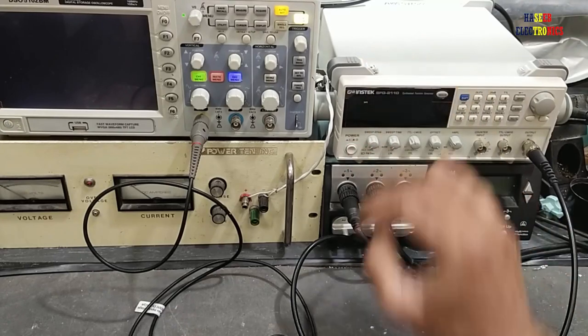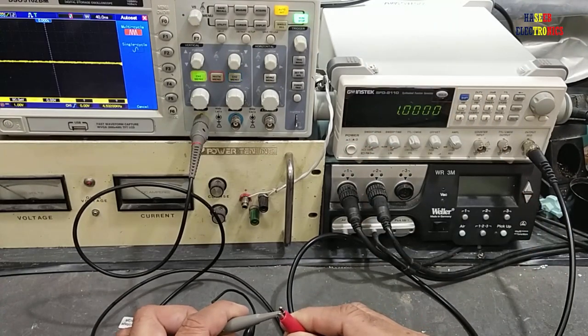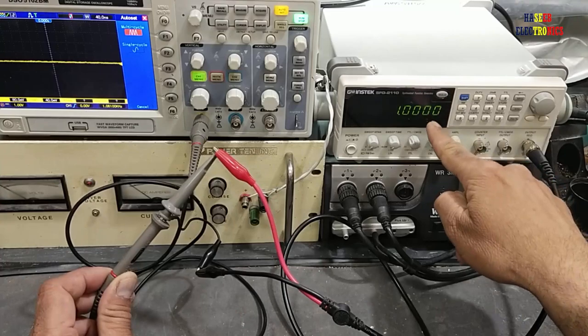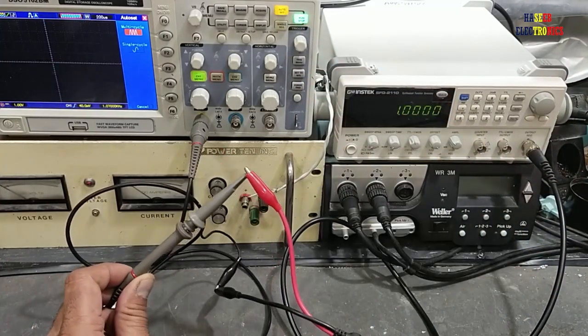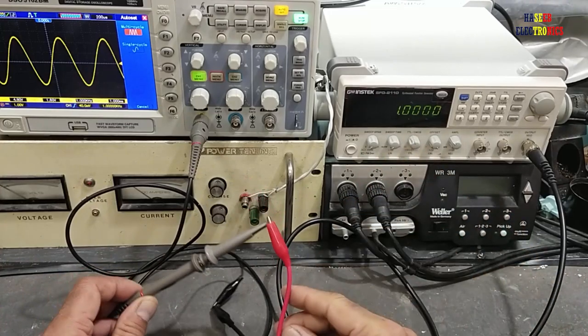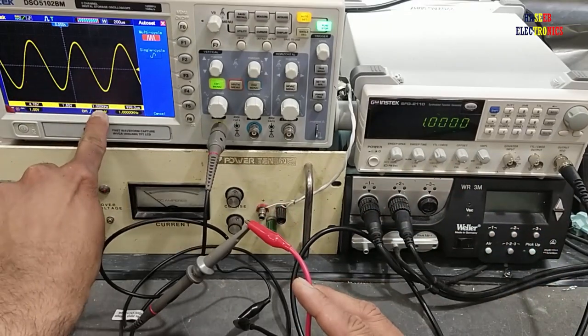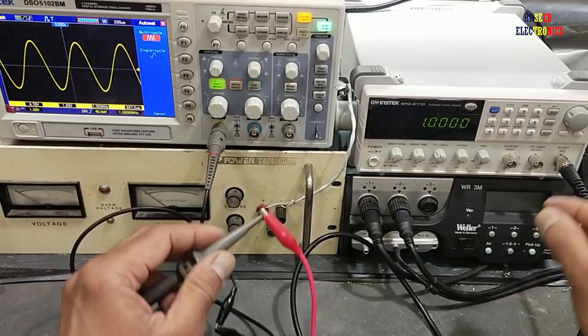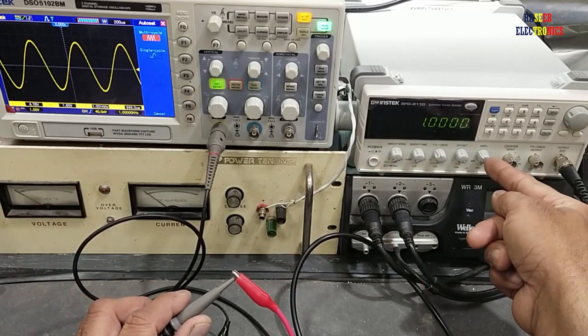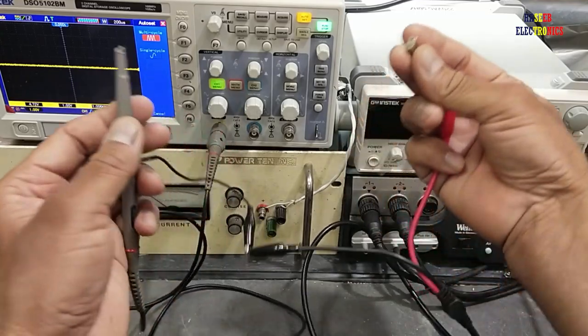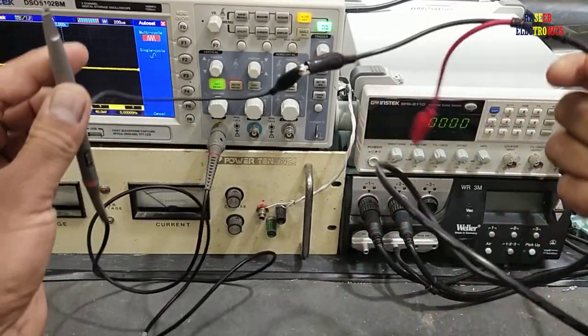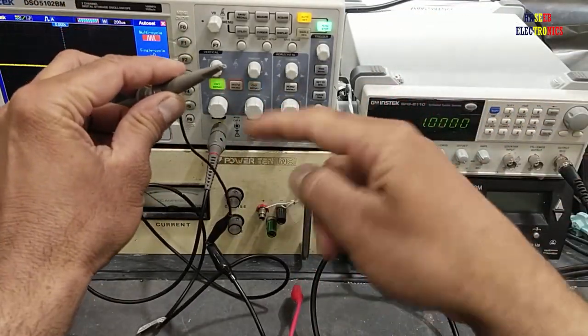First, I will set the function generator to 1 kilohertz frequency and 5 volts. It is 4.8 volts peak-to-peak at 1 kilohertz. If needed, we can adjust the voltage from this amplitude knob. This is the function generator, and this is the oscilloscope.